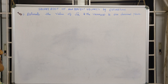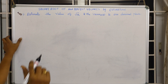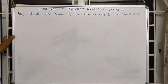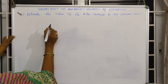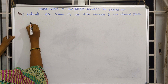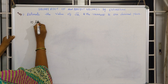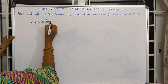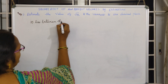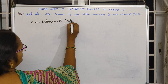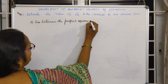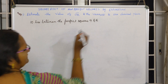What is this estimation method and how do we do it? We have to find out the square root of 10. Square root of 10 means that 10 lies between two perfect square numbers. 10 lies between the perfect squares 9 and 16.